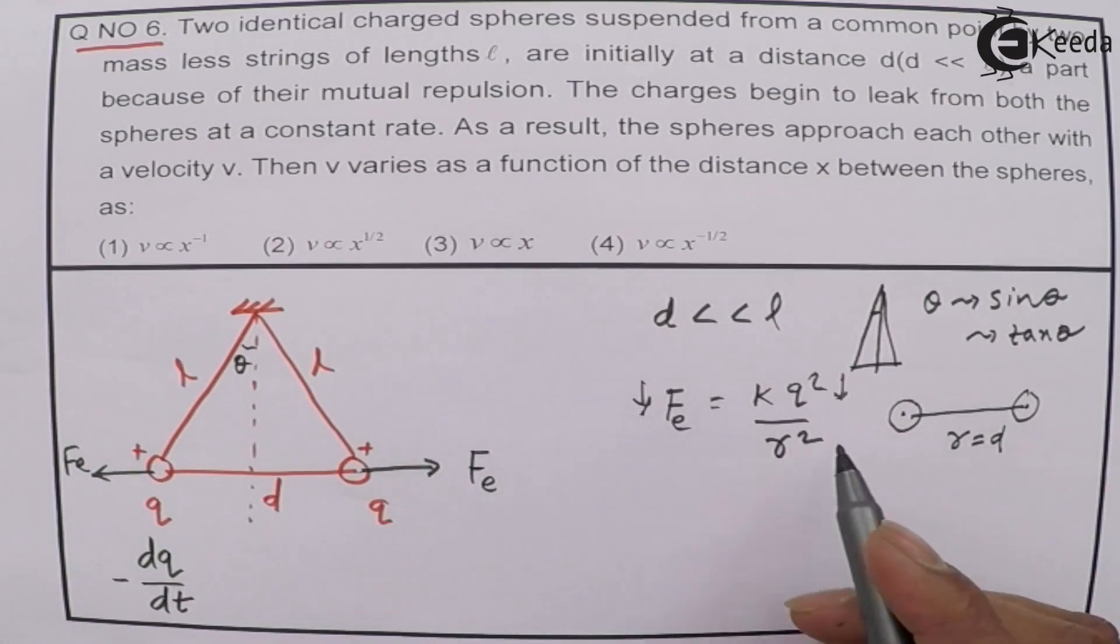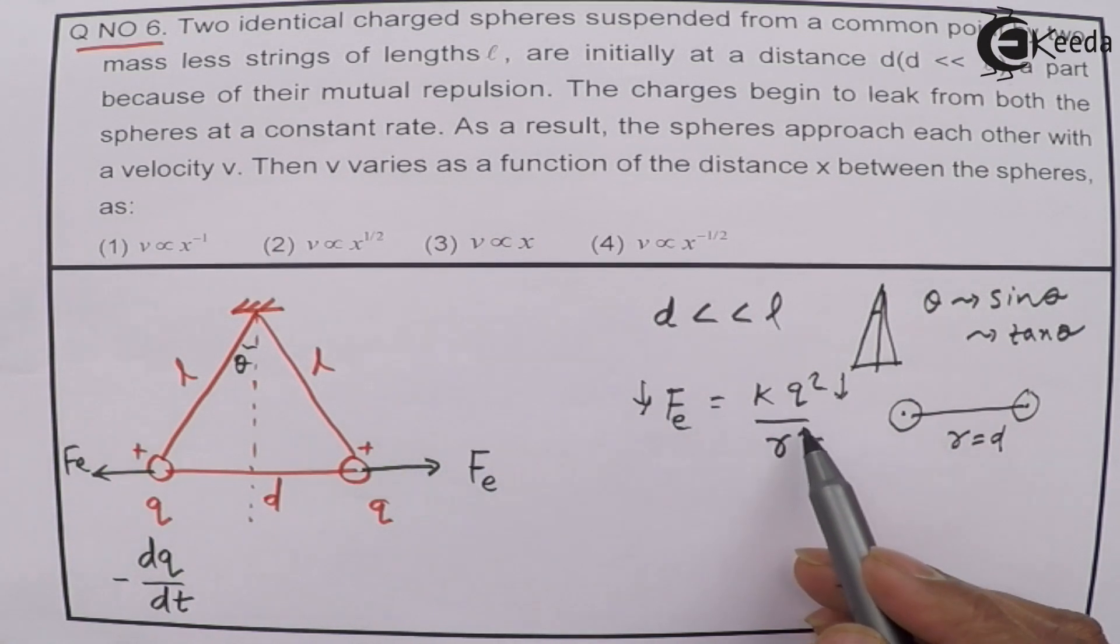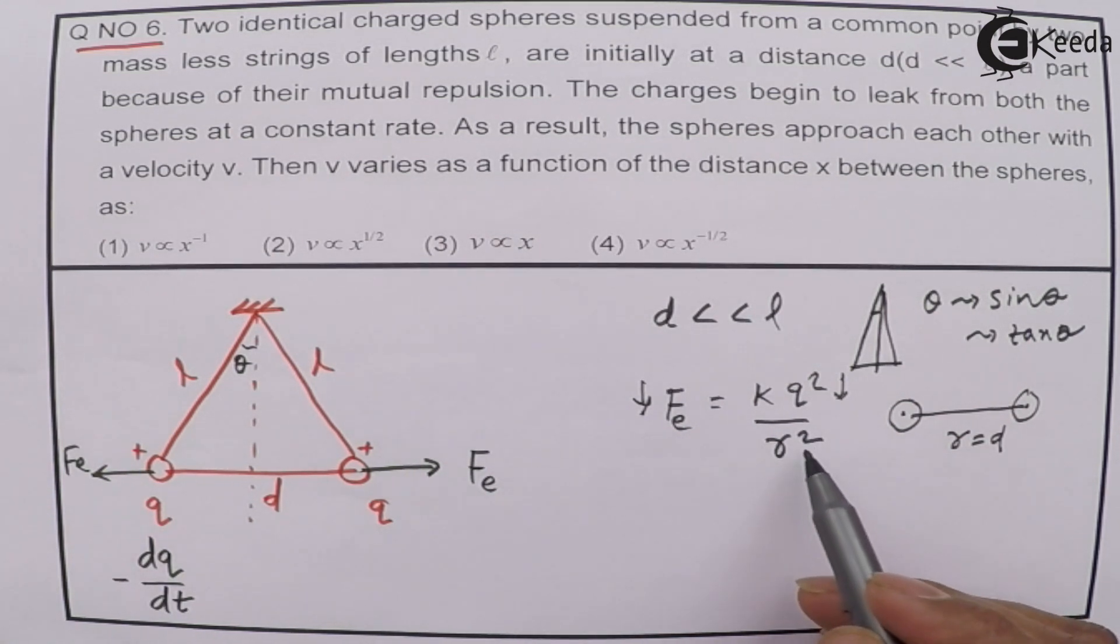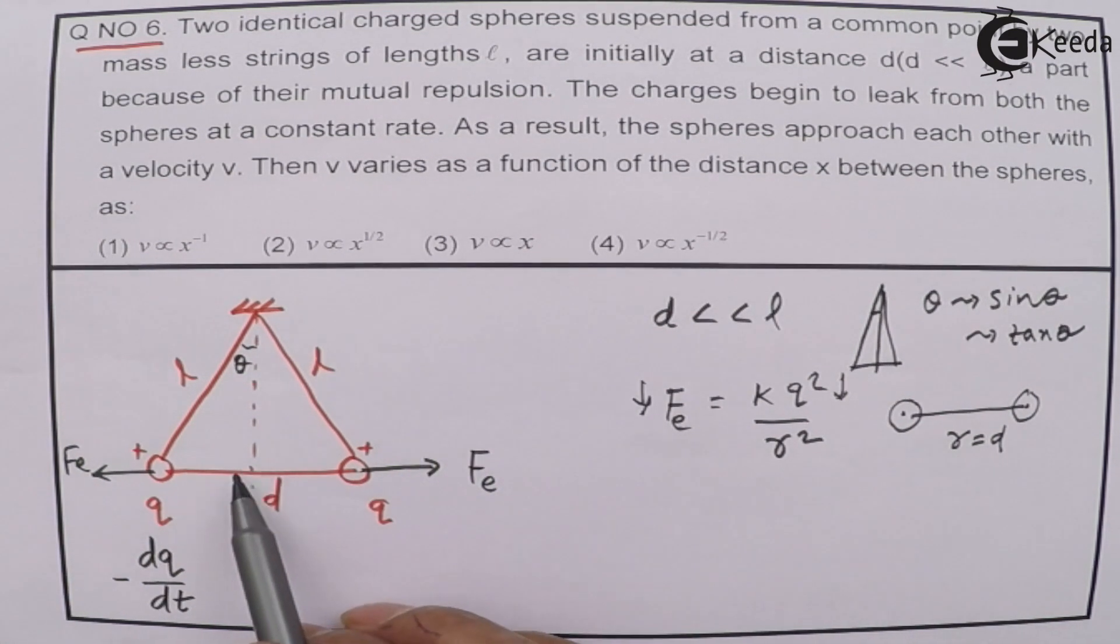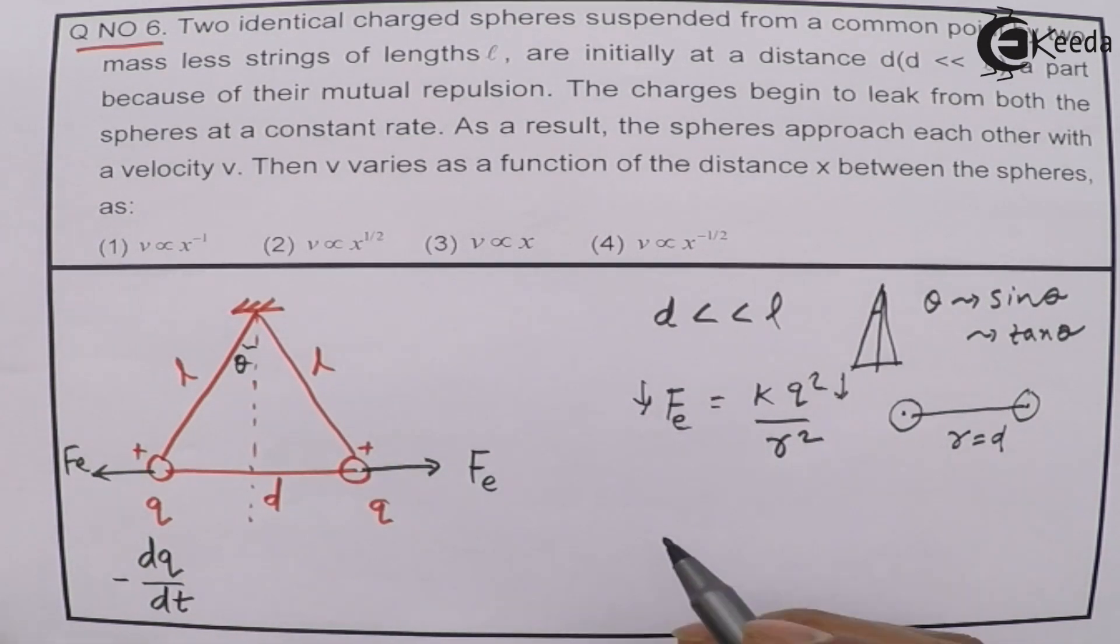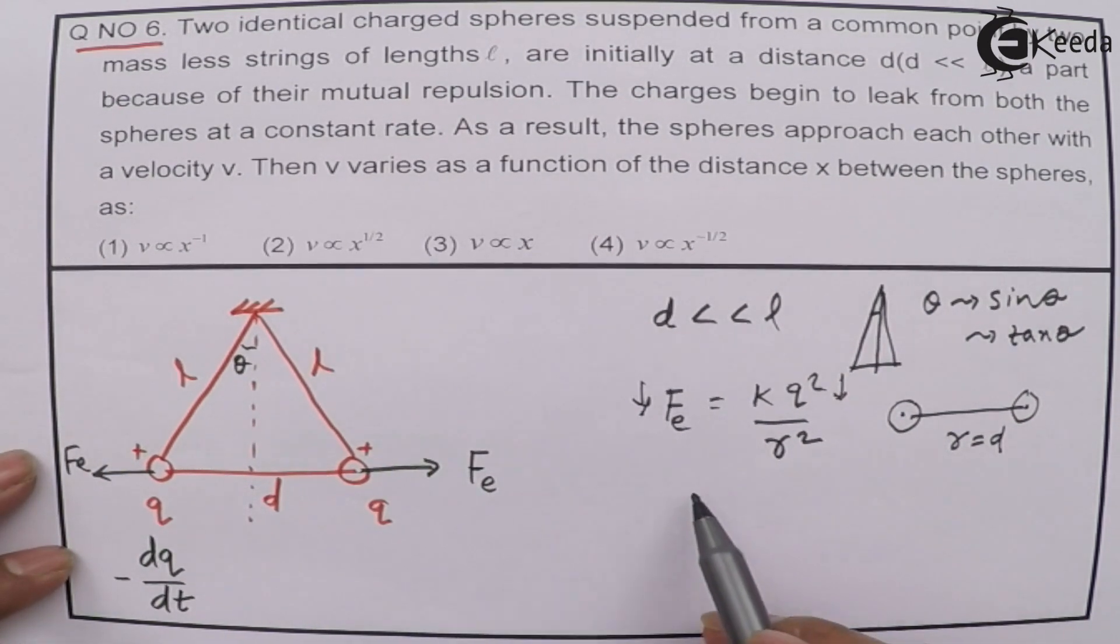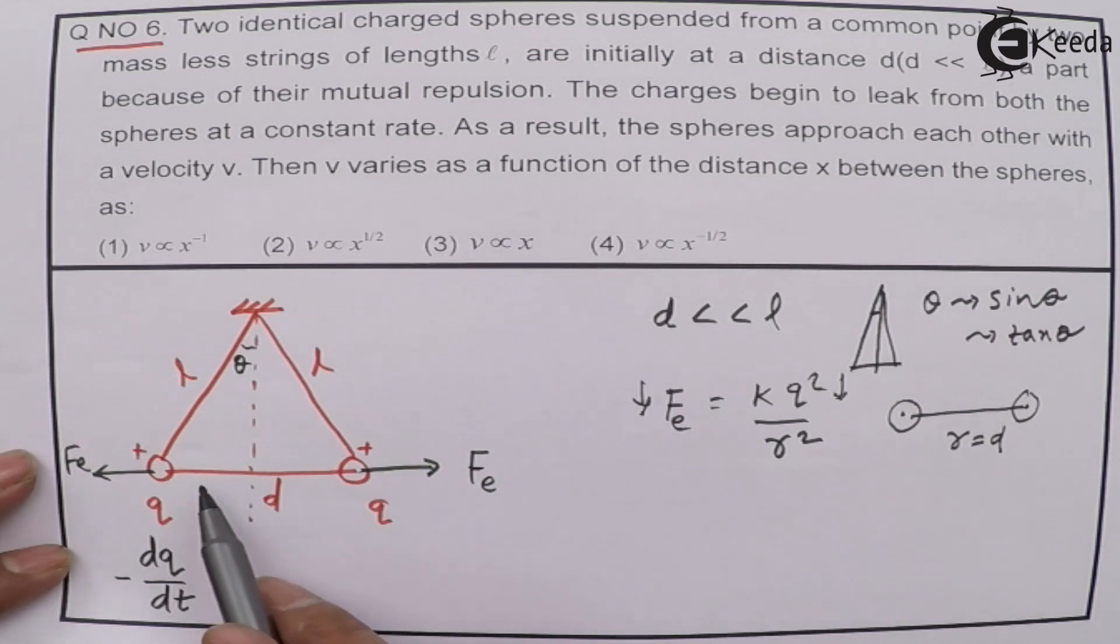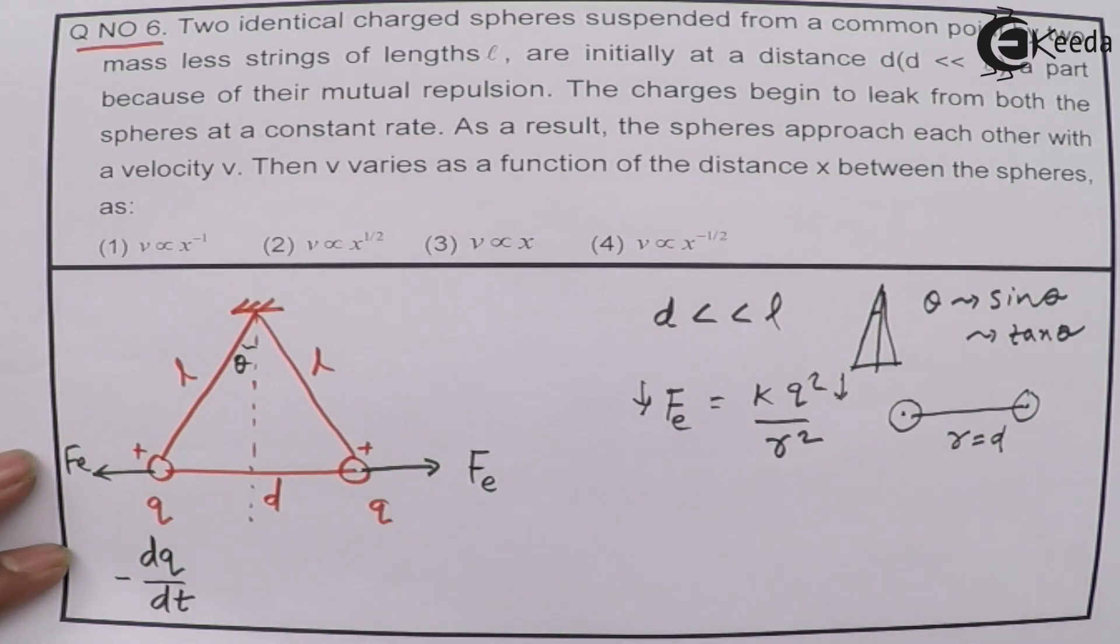If the force decreases, then this distance will also decrease. If the charge is zero, then the force will also be zero. So force decreases, and then this should decrease. This will come closer. And suppose that any position, the distance of separation between these two spheres is now like this.